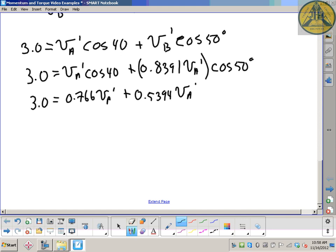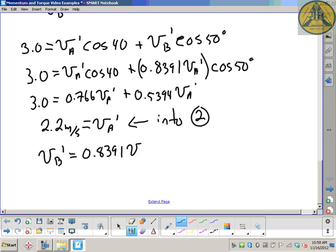Rearranging and solving for VA prime. I'm not going to go through every one of those steps, but double check. You should get 2.2 meters per second to be VA prime. I'm going to put that back into equation 2. VB prime equals 0.8391 VA prime. So 0.8391 times 2.2 comes out to be 1.9 meters per second.